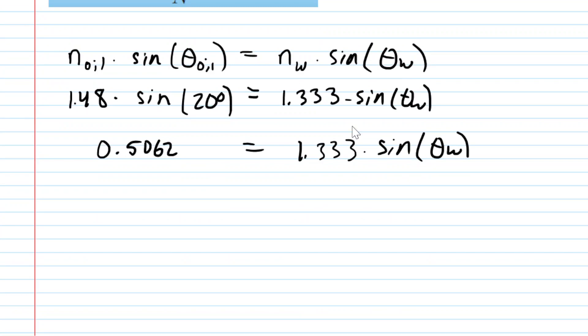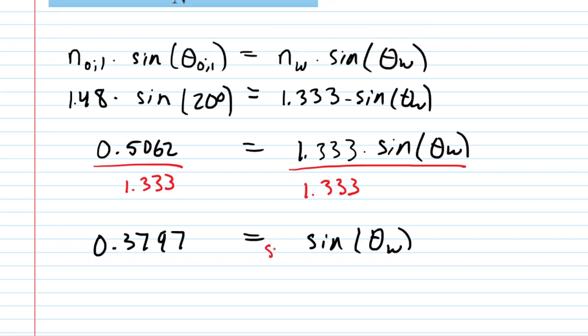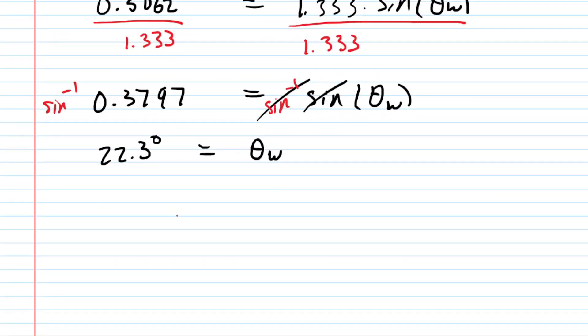We'll then divide both sides of the equation by 1.333. This gives us 0.3797 on the left side. And then finally to solve for theta, just like before, we're going to take the inverse sine of both sides of the equation. This cancels it on the right-hand side. On the left-hand side, you put that into your calculator, you're going to get about 22.3 degrees. That would be the refracted angle of the light as it travels into the water side of the interface. The diagram called that theta prime. So you can also denote it in that fashion too. So this is the correct answer to the second part of the question.